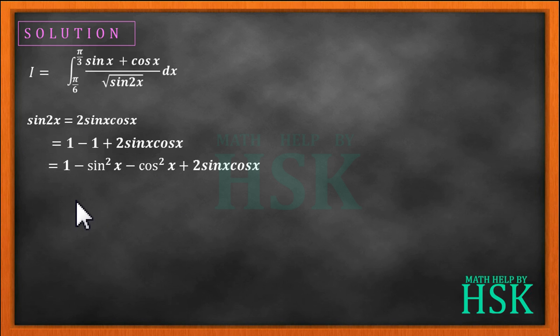Further it can be written as 1 minus in bracket sin square x plus cos square x minus 2 sin x into cos x, or 1 minus sin x minus cos x whole square.